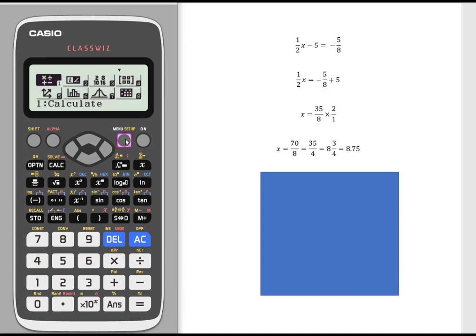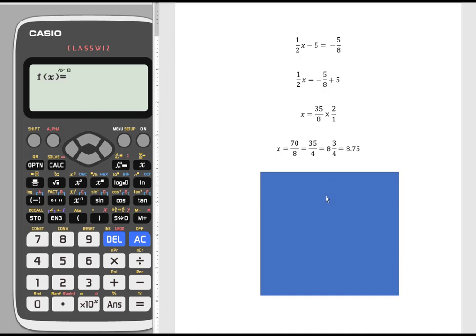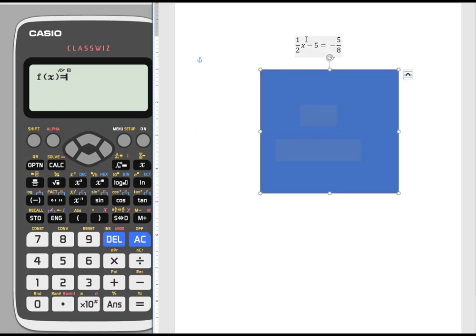Another way to use the calculator is to use a table of values. This way takes a little bit longer, but it is another way. We're going to hit equals to go into our table. What we're doing is you enter each side of the equation as a separate function.